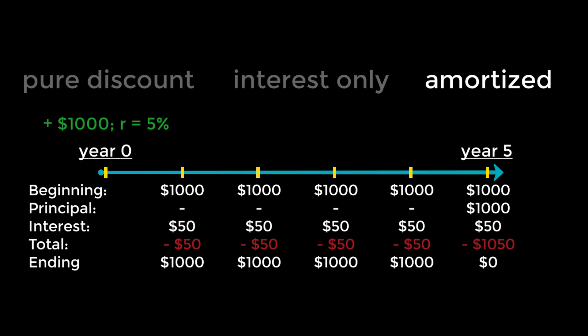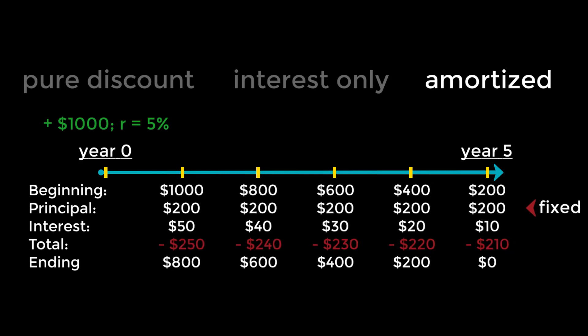Where the pure discount loan requires you to pay everything lump sum at the end, and the interest-only loan allows you to spread out your interest payments but pay the principal as a lump sum at the end, the amortized loan allows you to spread out both your interest payments and payments on the principal over the length of the loan. But there are two ways of doing this.